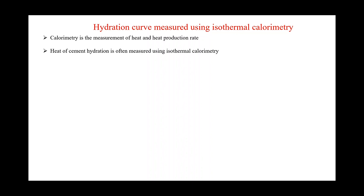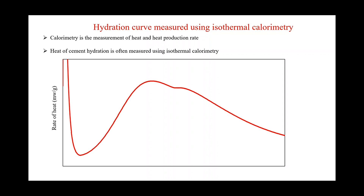Since temperature affects the hydration reaction, the heat released is measured at a constant temperature using isothermal calorimetry — 'isothermal' meaning constant temperature. This is a typical cement hydration curve measured at 20 degrees Celsius. On the x-axis is time, and on the y-axis is the rate of heat in milliwatts per gram. This rate is always normalized per gram of cement or cementitious material.